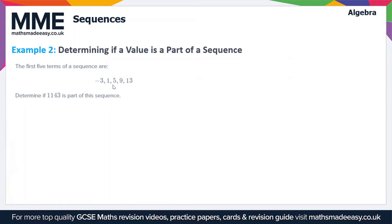Moving on to the second example, this time we're going to try and determine if a value is part of a sequence. We've got the first five terms of a linear sequence here: -3, 1, 5, 9, and 13. And we want to determine if 1143 is a part of the sequence.